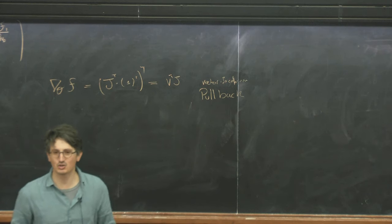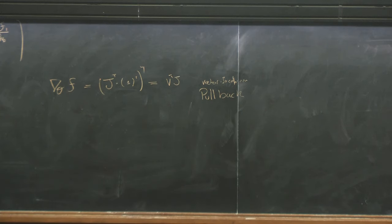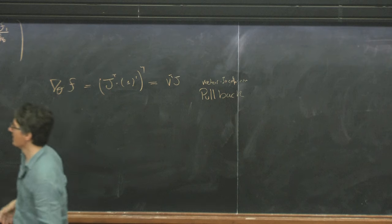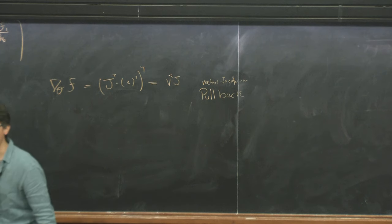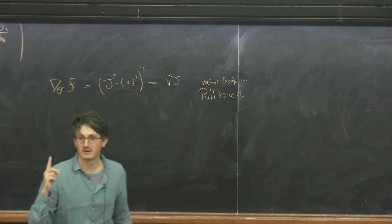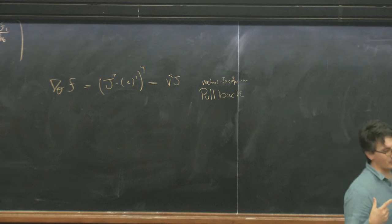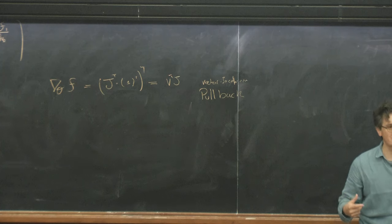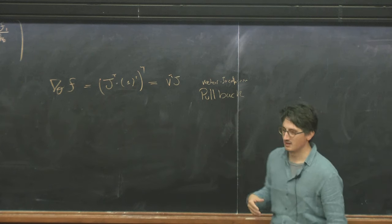Instead, if you use what automatic differentiation is actually built upon — the pullback, the vector-Jacobian product — you simply tell it: I want the Jacobian of this function that takes all samples as input and gives you the vector of amplitudes as output. But you don't ask for the full Jacobian — you ask for the pullback of this function for this vector. So contract the Jacobian with this vector: one pullback. Every time you reason about algorithms using automatic differentiation, you should not count gradients evaluated, but count the pullbacks or push-forwards performed.